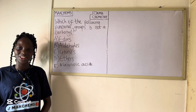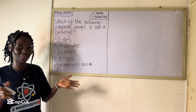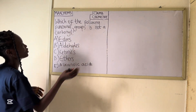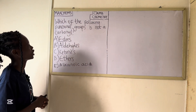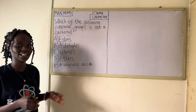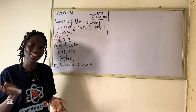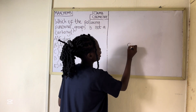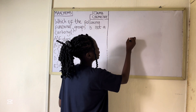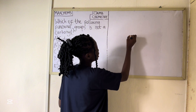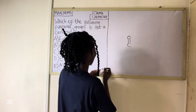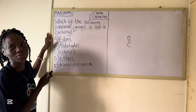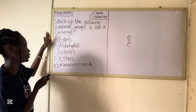Let's say you see this chemistry question in your JAMB exam — how are you going to solve it? The question says: which of the following functional groups is not a carbonyl? A carbonyl is a carbon atom double bonded to an oxygen atom. So let us explore the general formulas of the functional groups you are given.